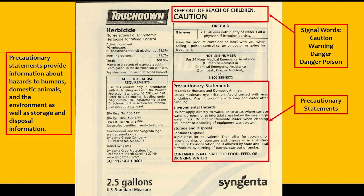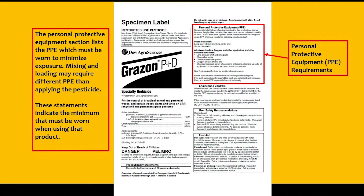The label will contain signal words varying in severity from Caution to Warning to Danger to Danger-Poison. Labels also have precautionary statements that provide information about hazards to humans, domestic animals, and the environment, as well as storage and disposal information.